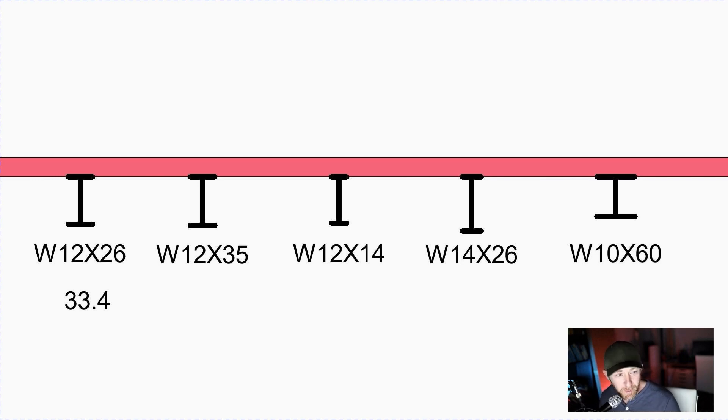All you need to know is what's going to increase the section modulus. So if we start with the W12 by 26, so this is an I beam or W flange that is about 12 inches tall and about 26 pounds per linear foot. It's got a section modulus of 33.4. Can you think about which of these beams are going to increase section modulus and thus decrease flexural stress? And which ones will decrease section modulus and increase flexural stress? So I'm going to show the answer in three, two, one.